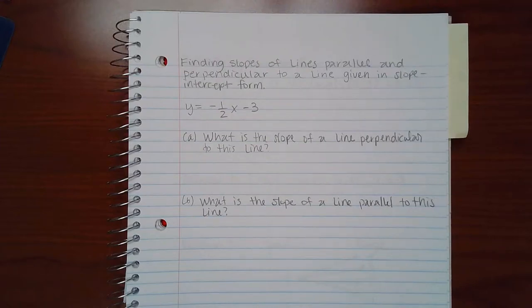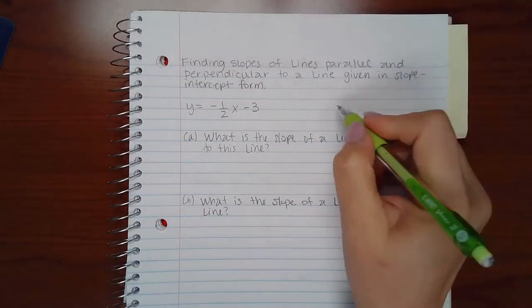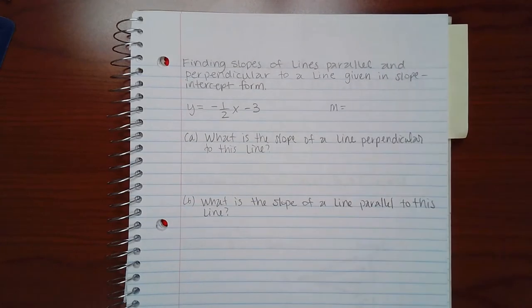This topic is finding slopes of lines parallel and perpendicular to a line given in slope-intercept form. If the line is given in slope-intercept form, it's nice because you can pick out the slope right away.